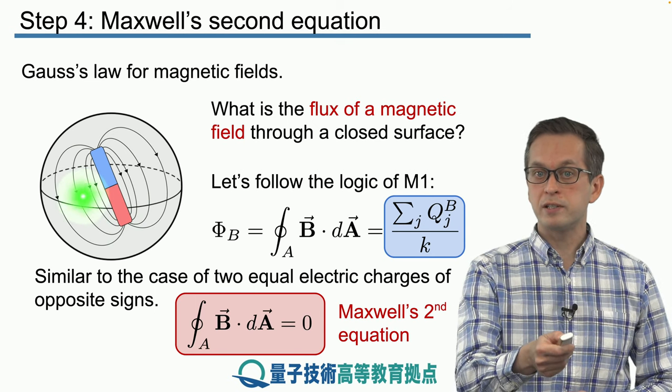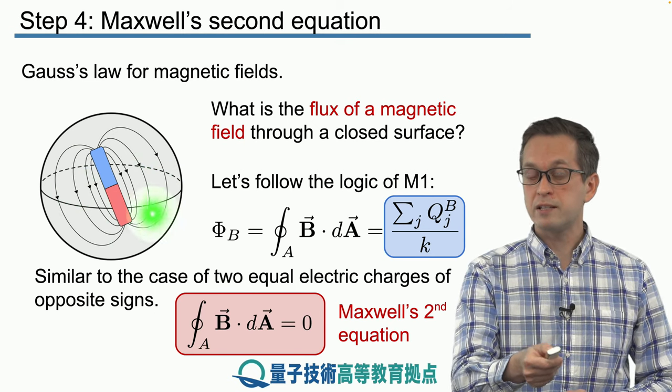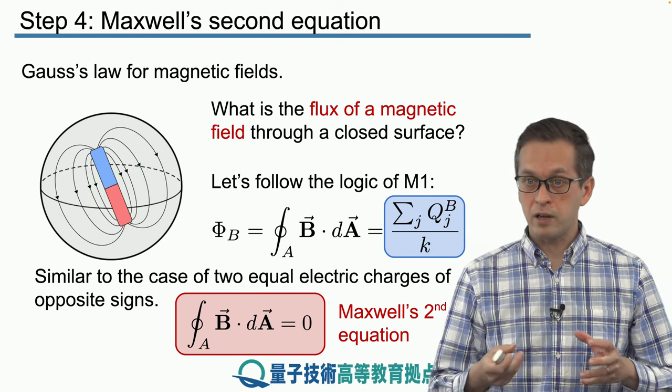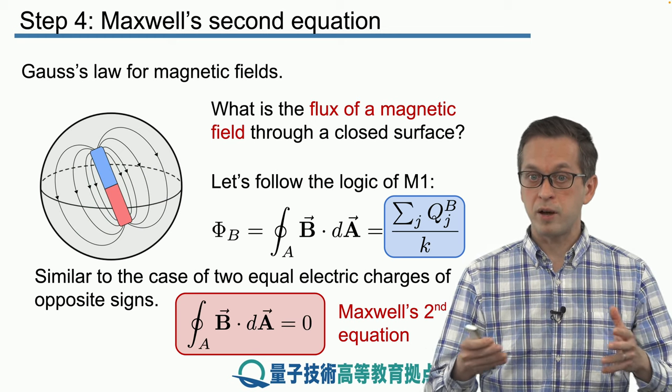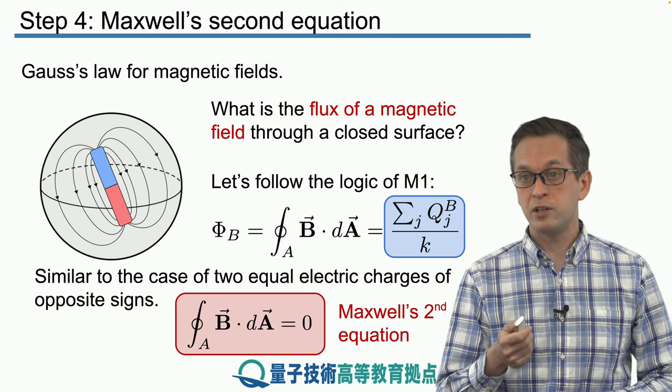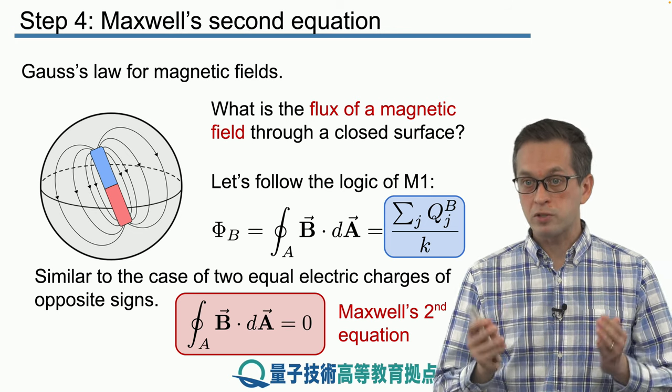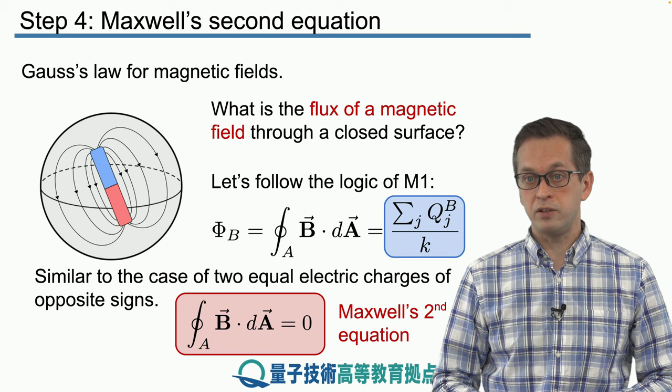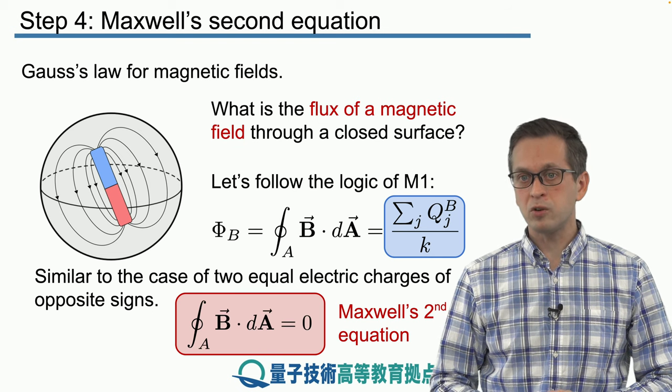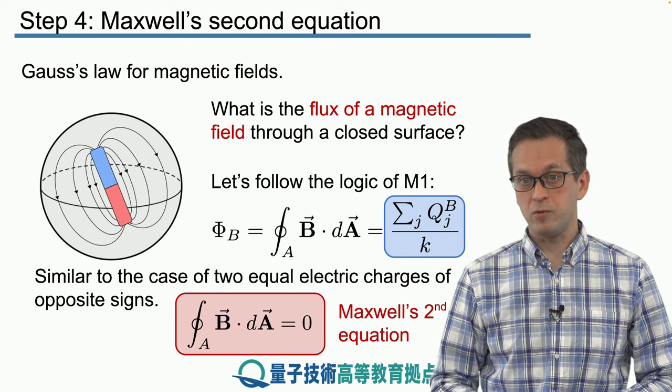And it doesn't matter how many of these little bar magnets you stick inside your sphere. The total effect on the magnetic flux passing through the surface will be such that it always cancels if you consider a closed surface enclosing all of your sources of magnetic fields. So that concludes our discussion of Maxwell's second equation.